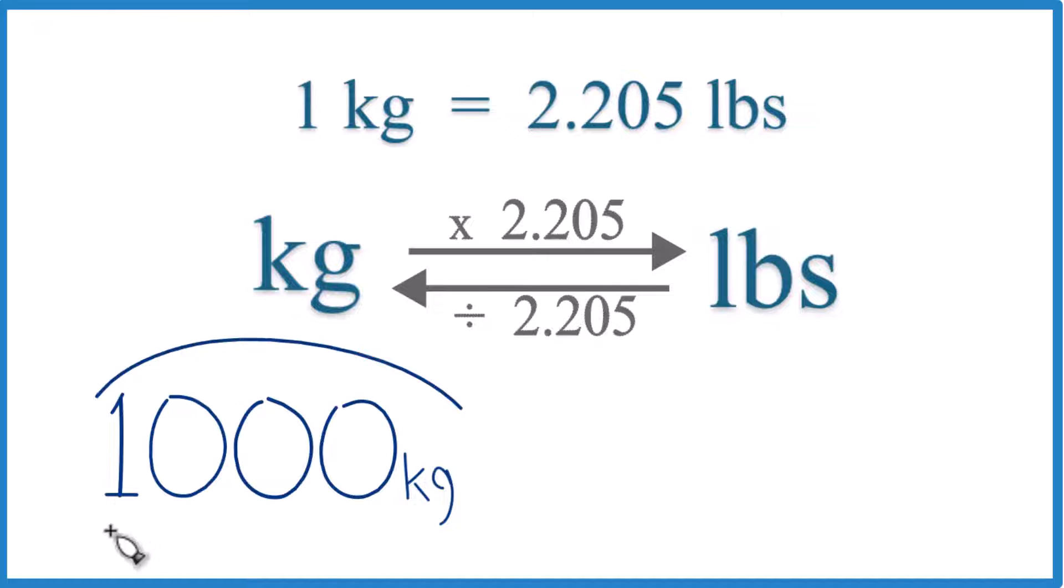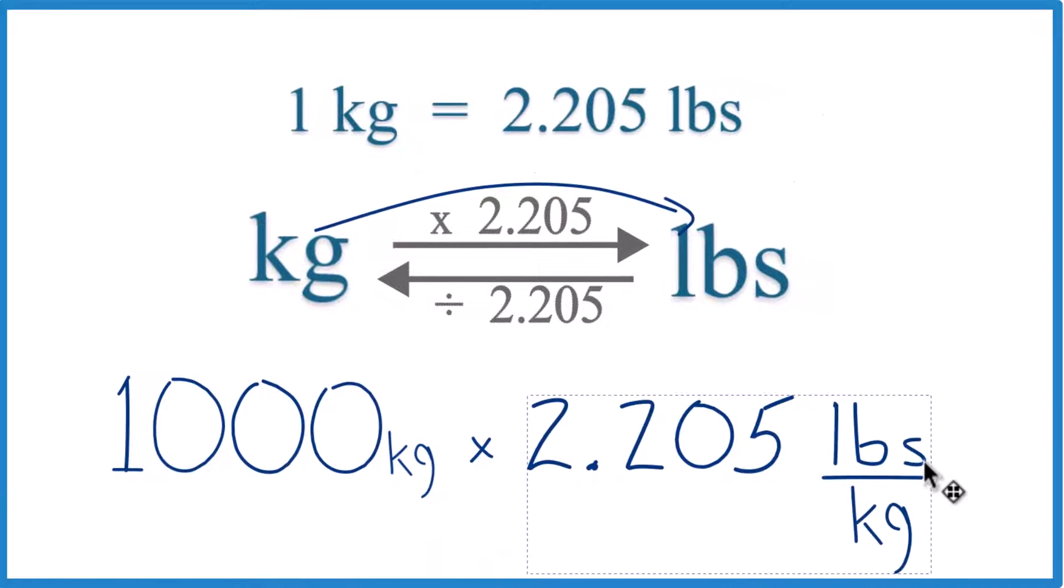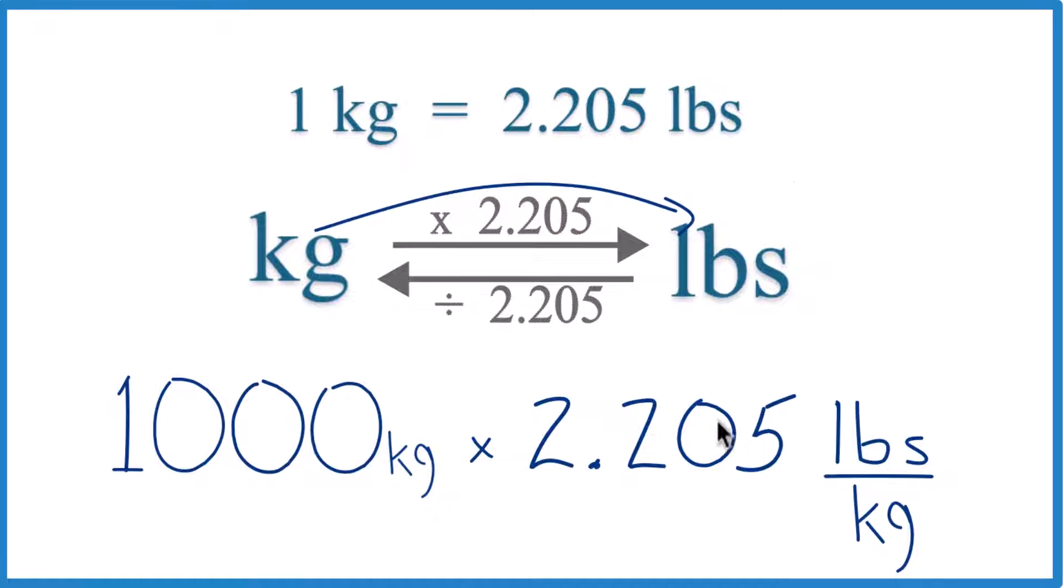So here we have a thousand kilograms. We want pounds. We're just going to go from kilograms to pounds. We multiply by 2.205. And this is our conversion factor again. And you can see it's 2.205 pounds per kilogram that came from this here.